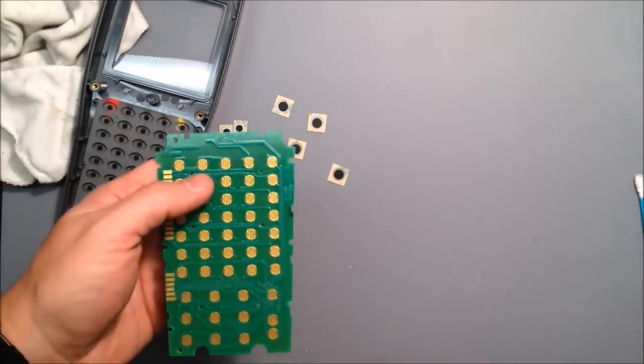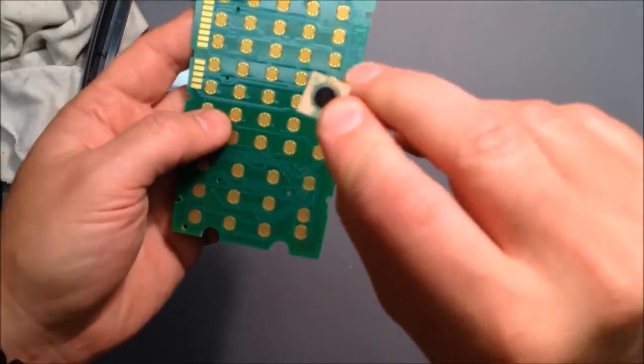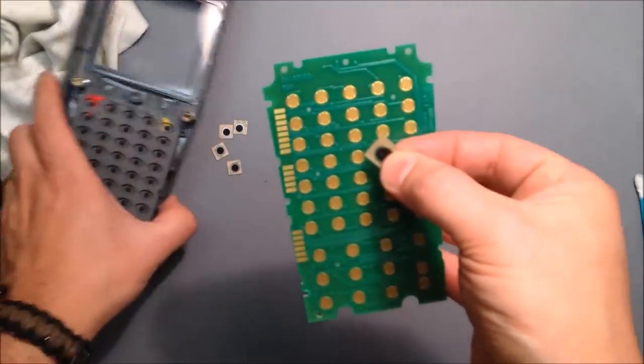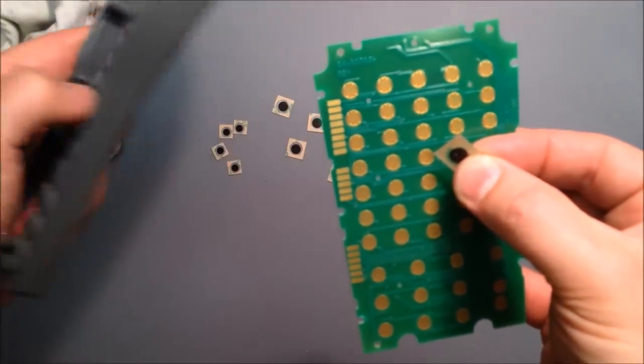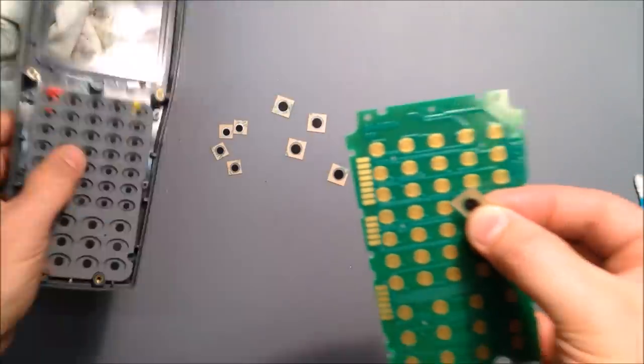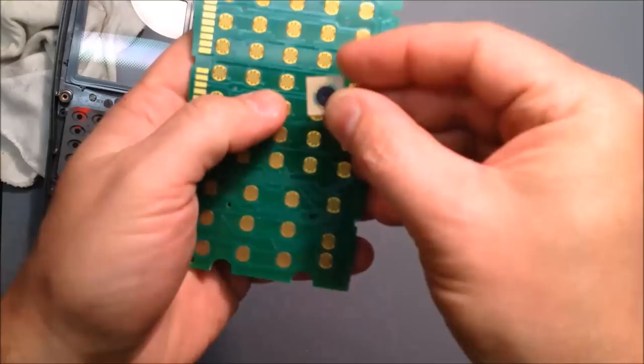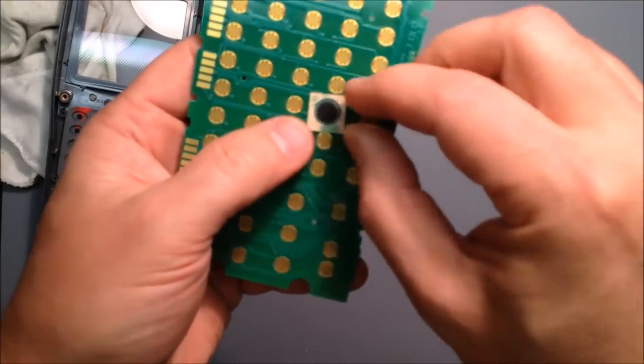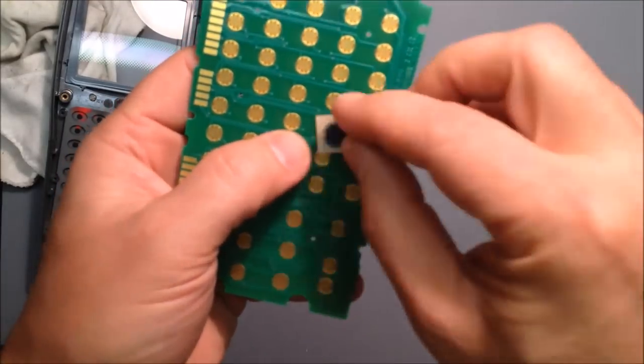Now what these do is these replace the conductive material. So you no longer need the black dots on the rubber keypad. You still use the rubber keypad, but these thin dots go right over the button that you want to fix.